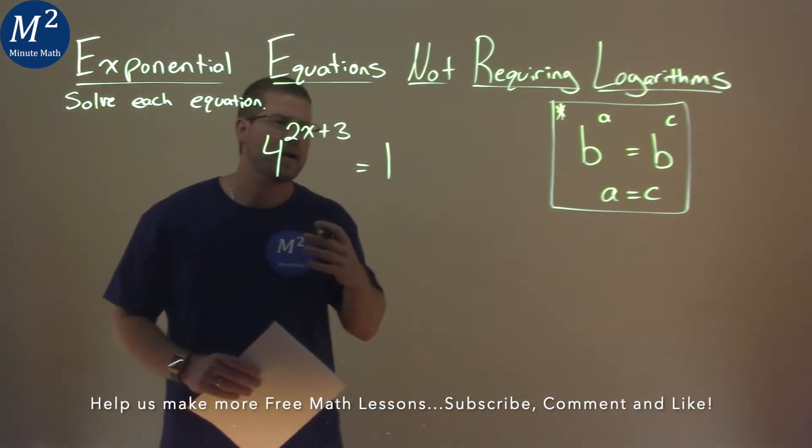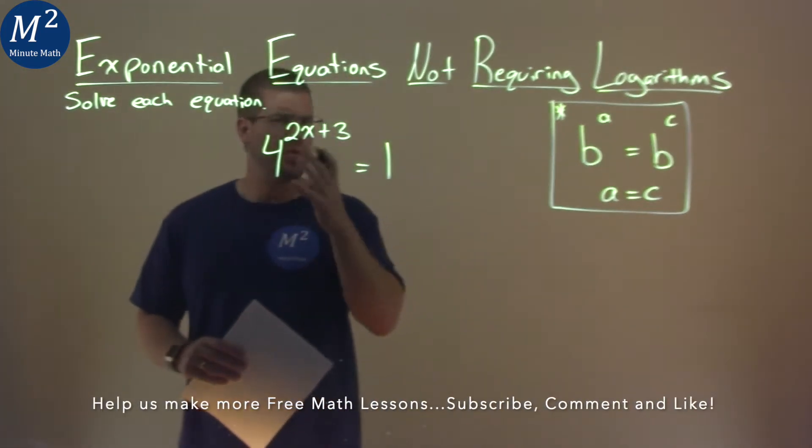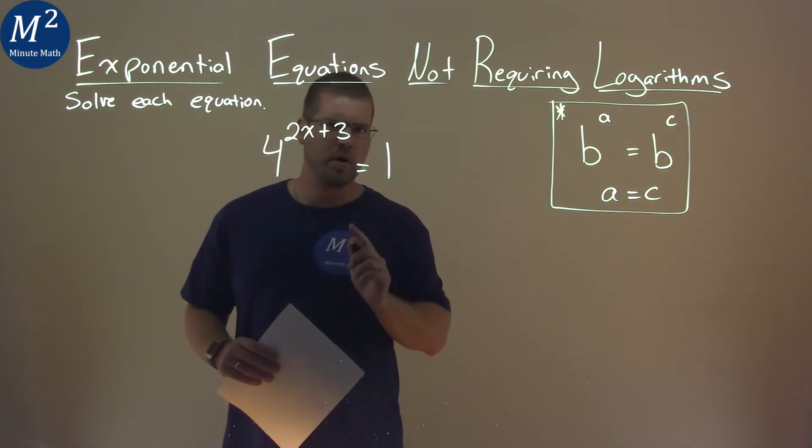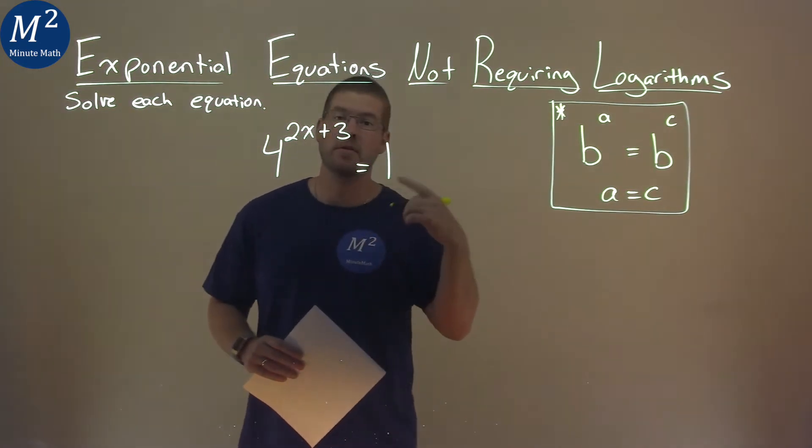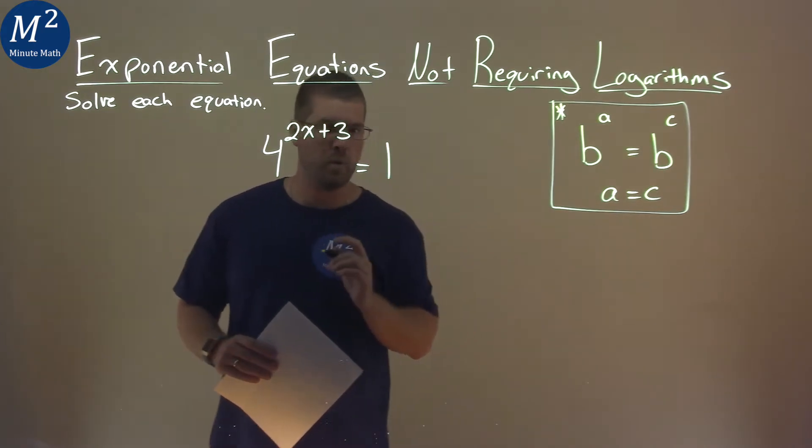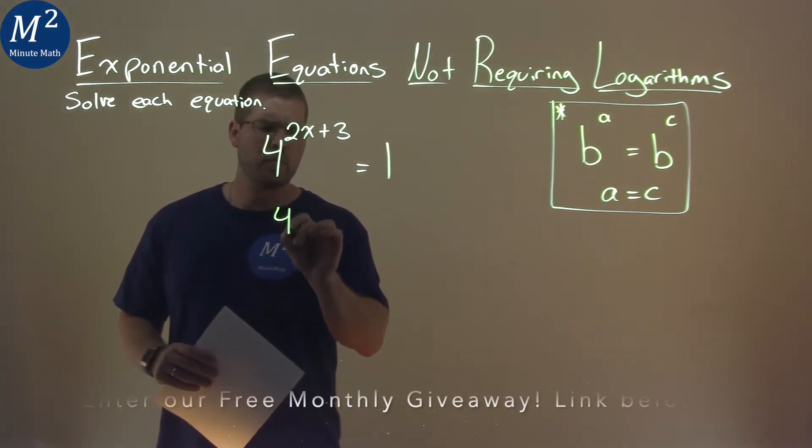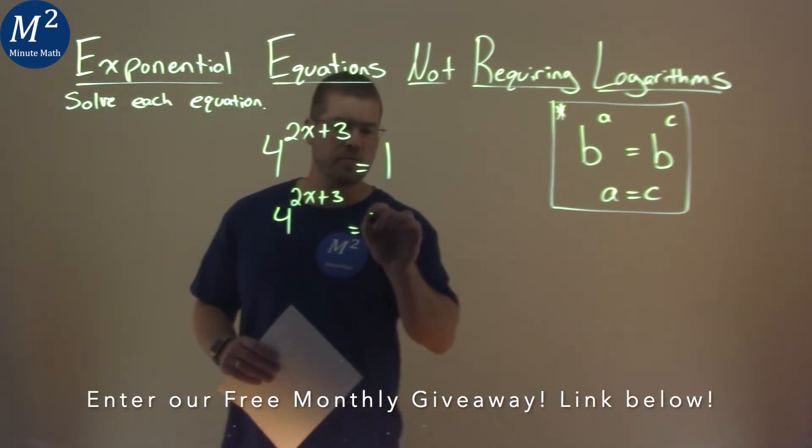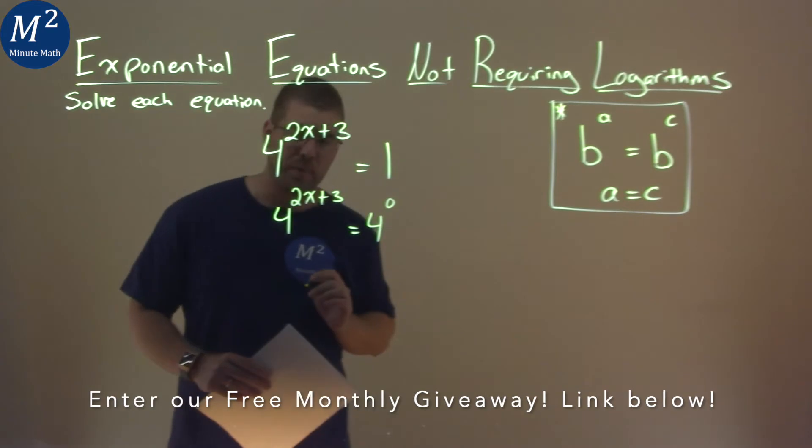So I want to find a way to have the same base for both sides of this equal sign. This one is the tricky part, but remember, anything to the 0 power is equal to 1. So we can take this 4 to the 2x plus 3, and I can rewrite this to be 4 to the 0 power.